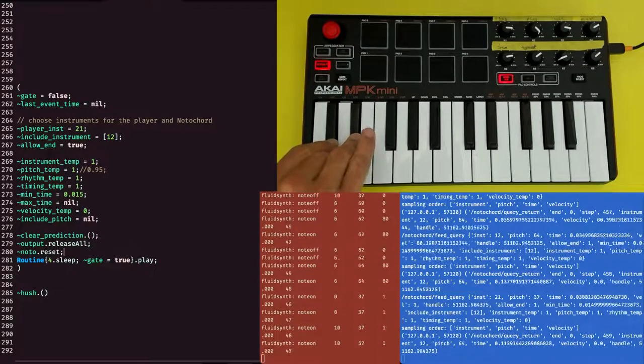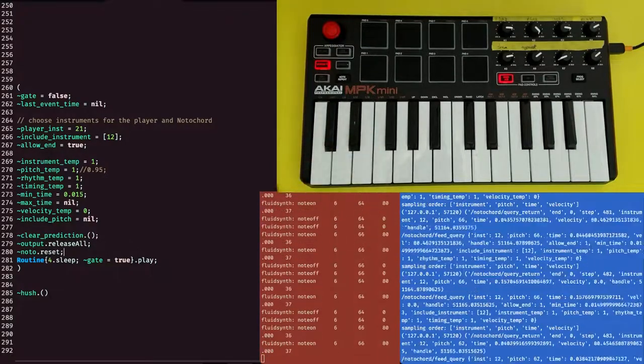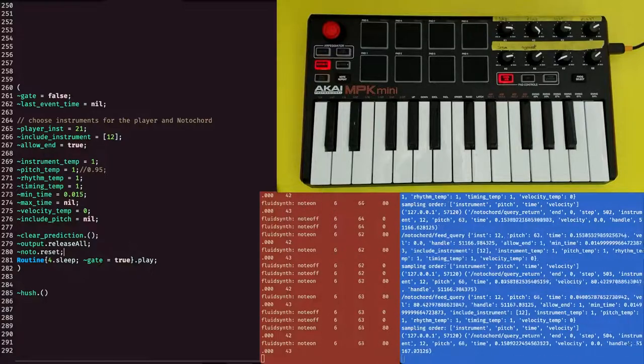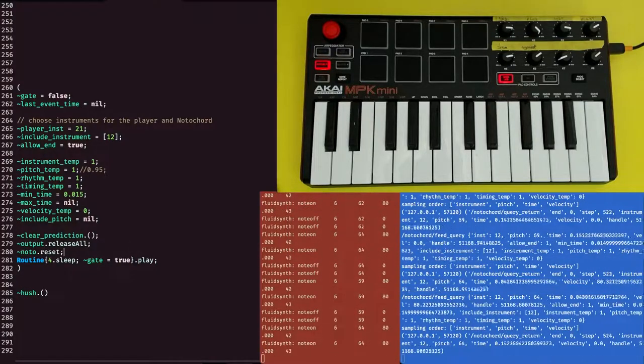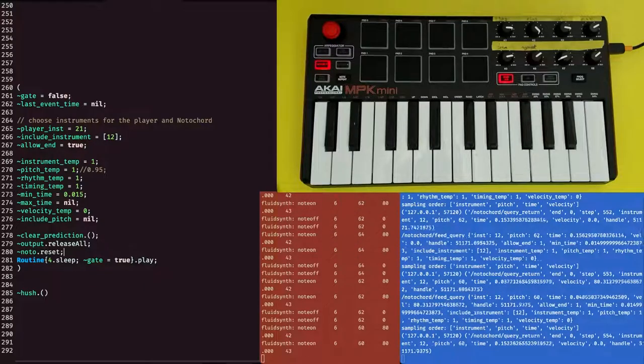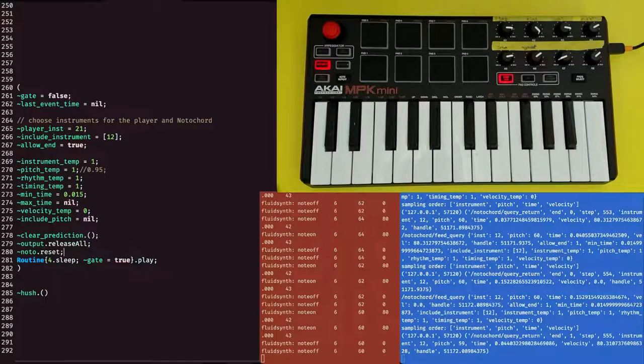This model, trained on the Lakh dataset, doesn't seem to know much about improvisation, but we could imagine fine-tuning on bespoke datasets, or combining Notochord's probabilistic knowledge with other strategies to build machine improvisers.